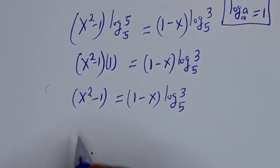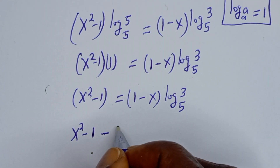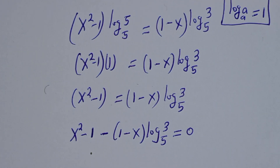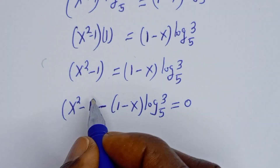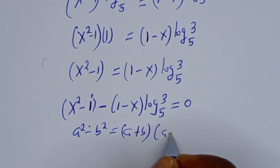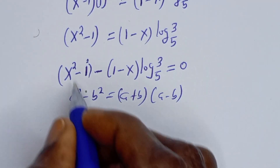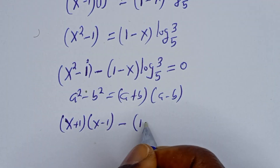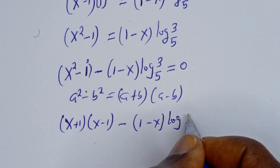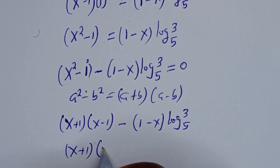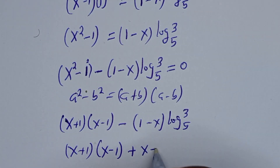Now let's bring everything to one side: s squared minus 1 minus (1 minus s) times log base 5 of 3 equals 0. Notice that s squared minus 1 is a difference of squares — it equals 1 squared minus s squared — and using a² minus b² equals (a plus b)(a minus b), this becomes s plus 1 times s minus 1, minus (1 minus s) times log base 5 of 3. Opening the bracket with minus 1 gives s plus 1 times s minus 1, plus (s minus 1) times log base 5 of 3.